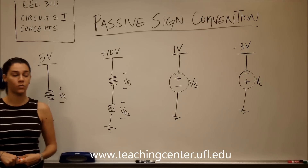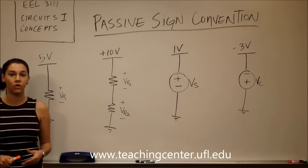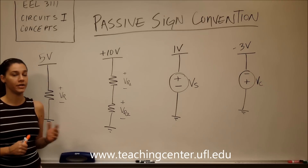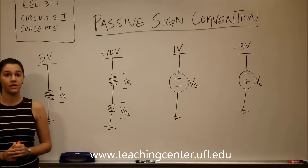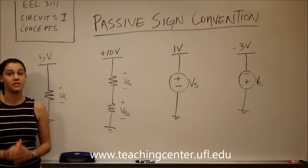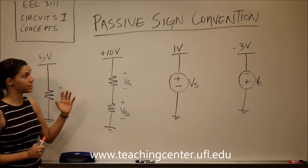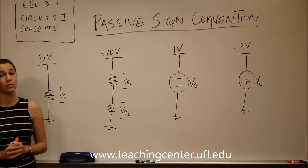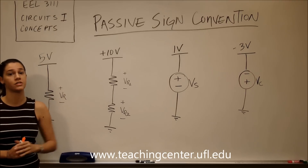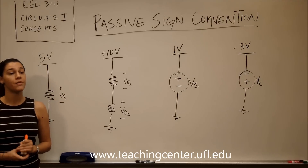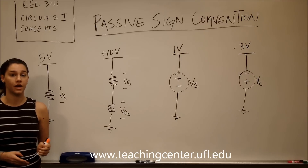Passive sign convention is obeyed when the current in the circuit is pointing towards the positive pole of the element. When passive sign convention is obeyed, the power in that element is being absorbed. When passive sign convention is not obeyed, meaning that the current is pointing out of the positive pole of the element, the power is being supplied.